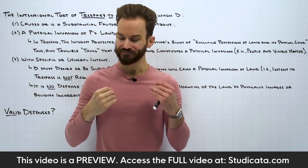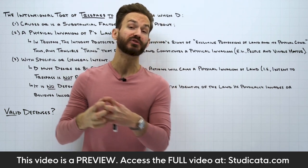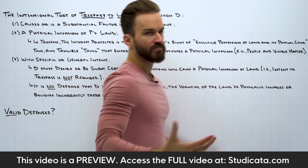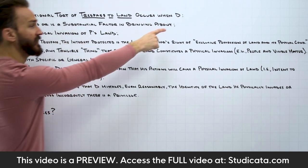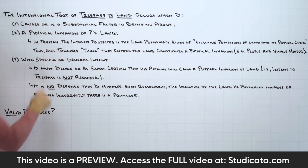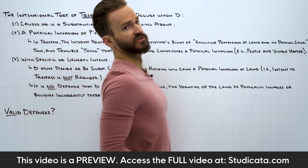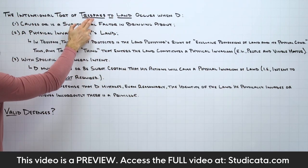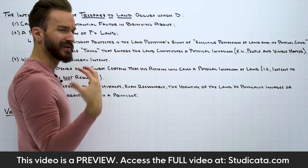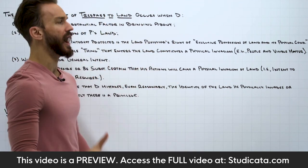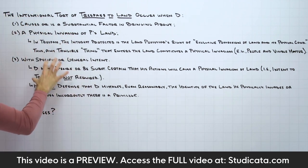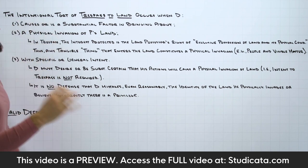For trespass to land, causation is usually going to be pretty straightforward. If somebody's walking onto somebody else's land, there is no causation issue — the defendant is clearly going to be the legal cause of the invasion. In our kind of classic fact patterns, causation is usually not a big issue. The heart of the analysis usually comes down to defining what a physical invasion is and understanding intent.